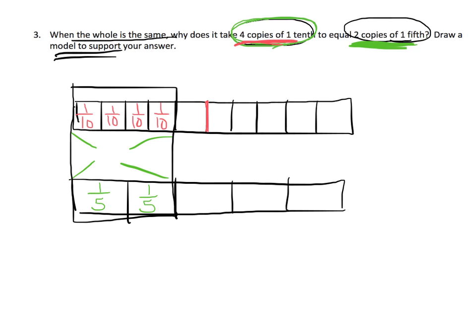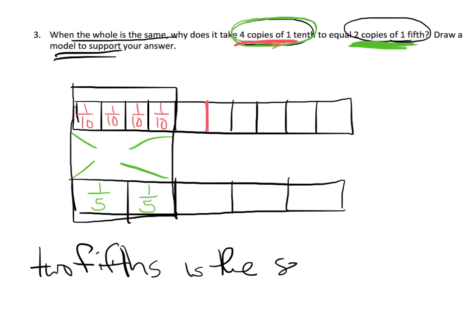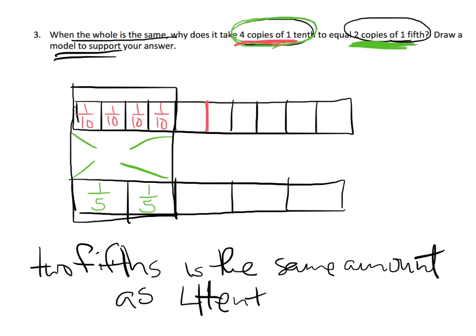Here are our four copies of one-tenth. Here are our two copies of one-fifth. They are equal — you can see that these line up perfectly. So if we write this out, two-fifths is the same amount as four-tenths.